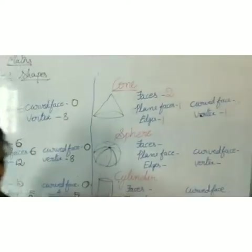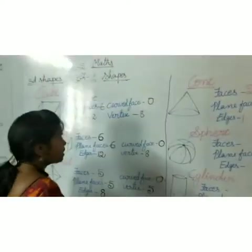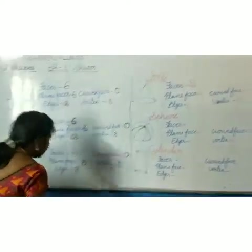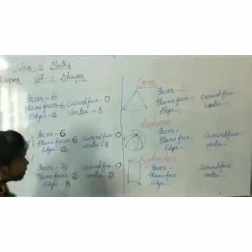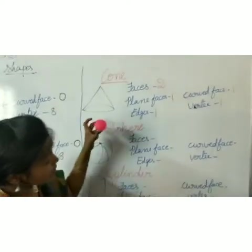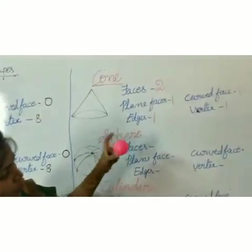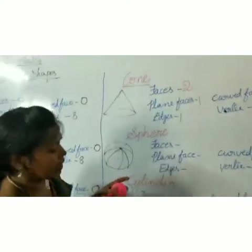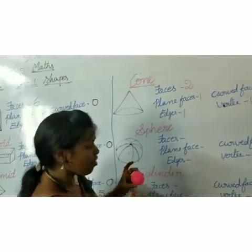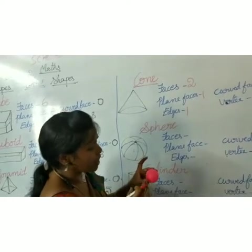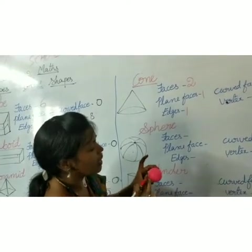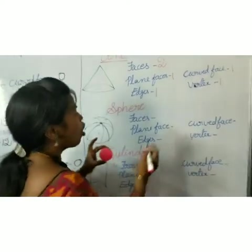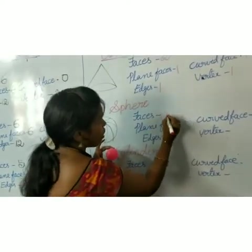Now let us see sphere. See children, this is the ball. Example for sphere. It has only one face. Can you guess? It has only curved face. So how many faces it has? Only one.